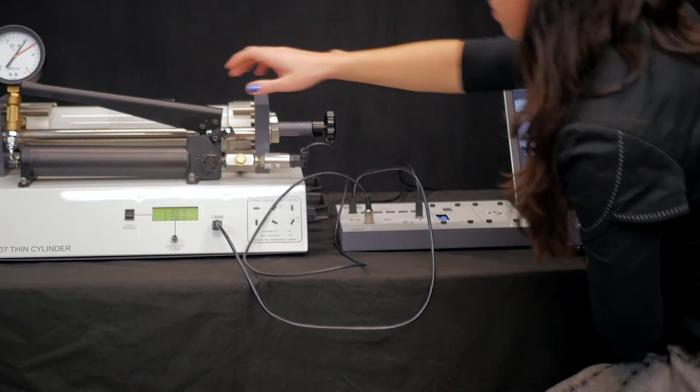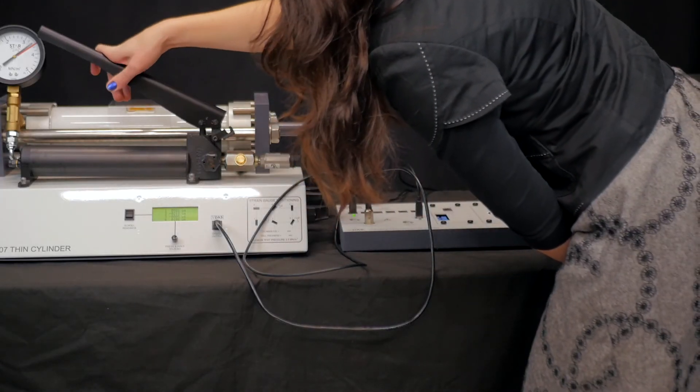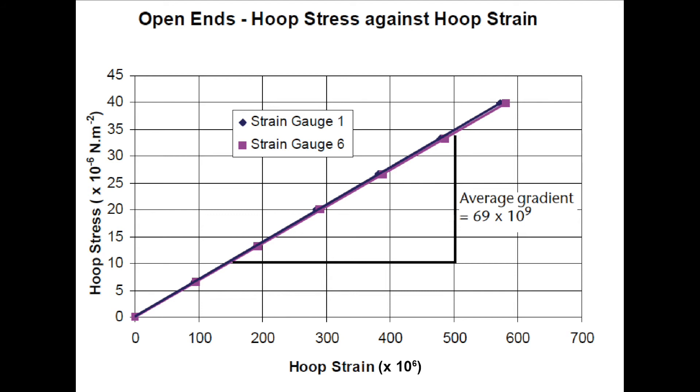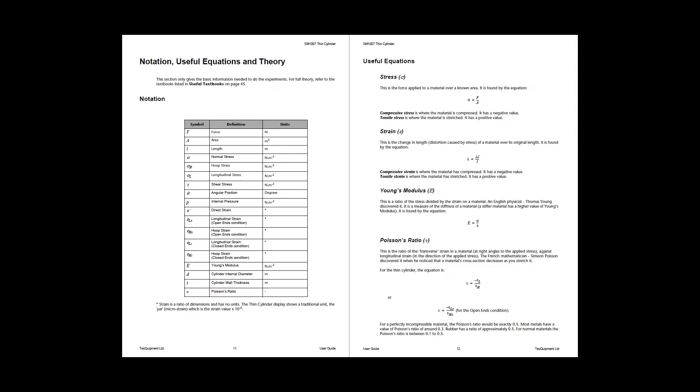Then increase by another 0.5 mega newtons per square meter until you've got a full table of results. With these results gathered, you can chart the strain against pressure on the vertical axis and the strain gauge readings from all six on the horizontal axis. This can be done automatically within VDAS. Then comes the maths and analysis using the equations and questions outlined in the user guide.